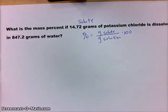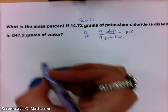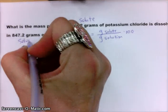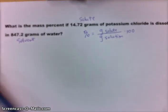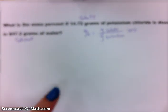847.2 grams of water, that is our solvent. Water is going to be our solvent in this problem because we have more of it than the potassium chloride. So we have identified our solute and our solvent.